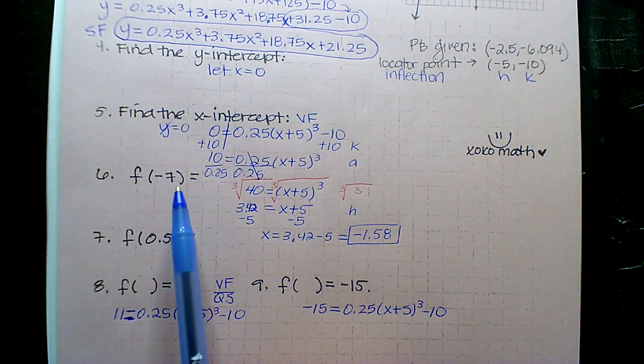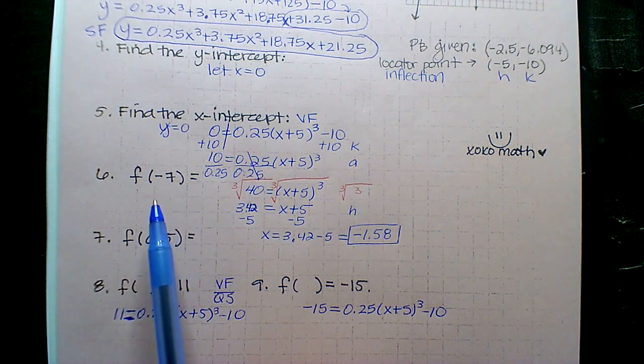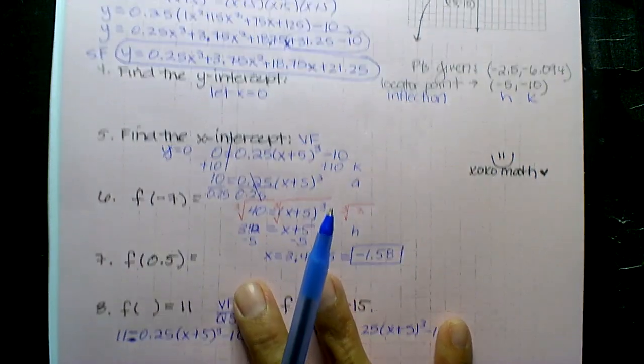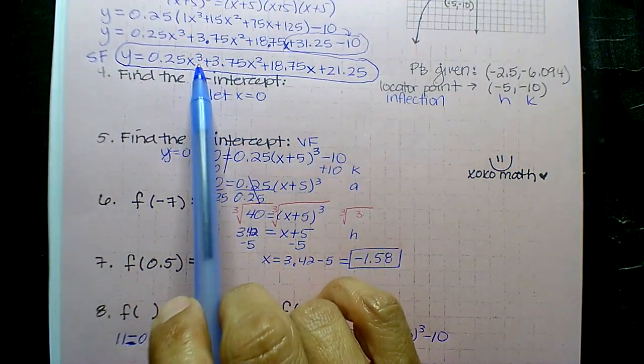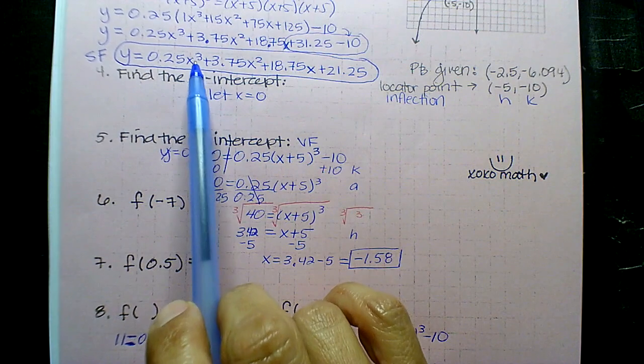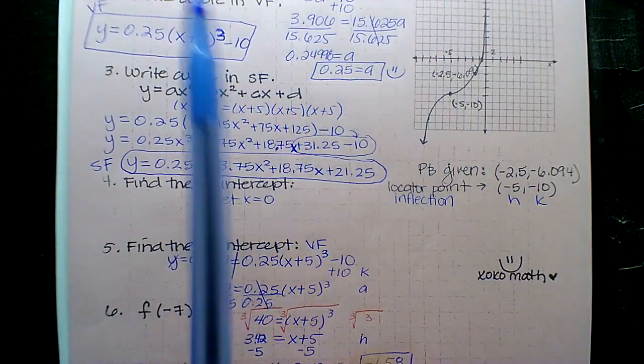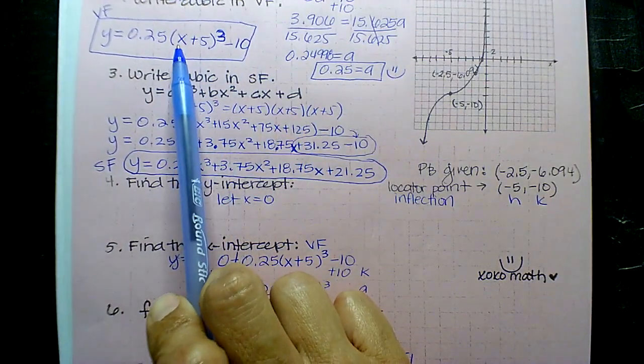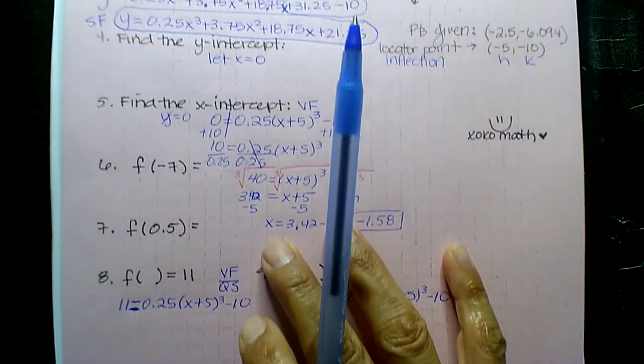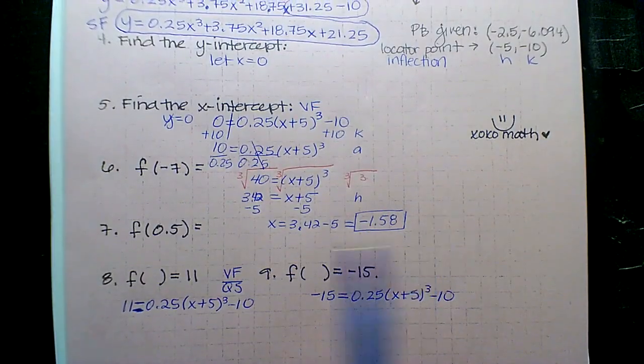And then 6 and 7, it's up to you. I would go vertex form, just because that negative 7, if you decided to go standard form, you would have to go 0.25 negative 7 cubed, plus 3.75 negative 7 squared. Like, that is so much work, versus you would just have to substitute it in one place, the negative 5 and the 0.5.